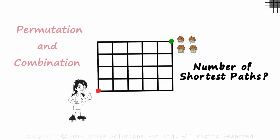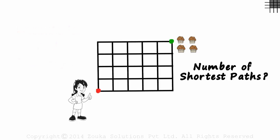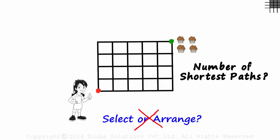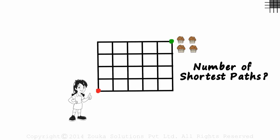This is a typical permutations and combinations problem you see in competitive exams. Sometimes we don't even realize that it's a permutations and combinations problem. Are we asked to select or arrange objects? No — then how is it a permutations and combinations problem? Read the question again: the number of shortest paths. 'Shortest' is the keyword here. We have been asked to select the shortest path.